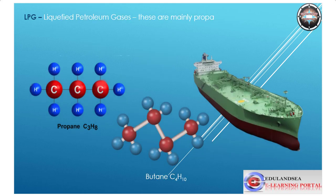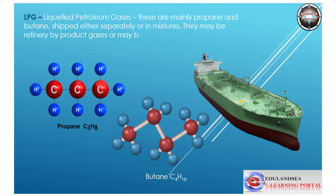LPG, liquefied petroleum gases: these are mainly propane and butane, shipped either separately or in mixtures. They may be refinery by-product gases or may be produced in conjunction with crude oil or natural gas.